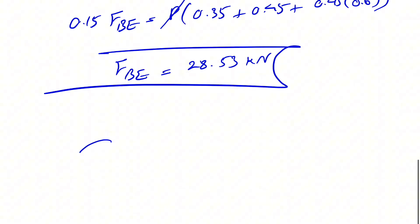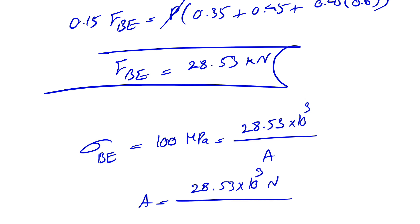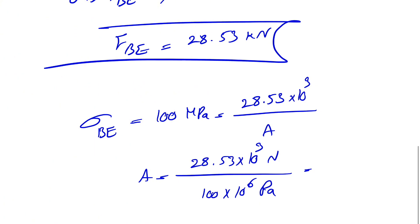From here we can find the average normal stress in BE, which from the question we know is 100 megapascals, and that's going to be 28.53 times 10³ newtons over the area. Our area, in order to get it in meters squared, will be 28.53 times 10³ newtons over 100 times 10⁶ pascals.